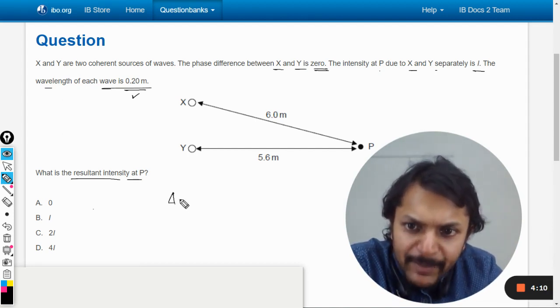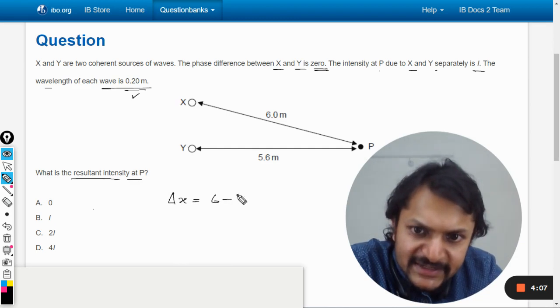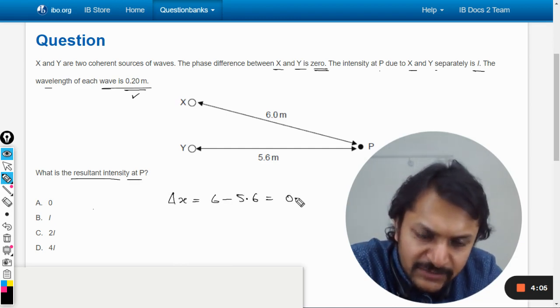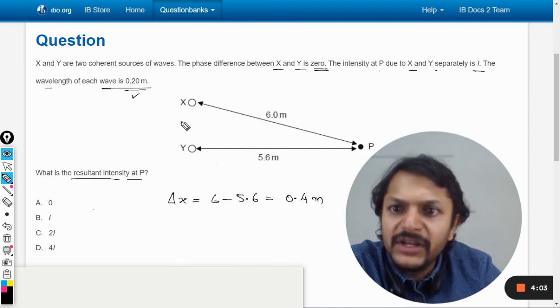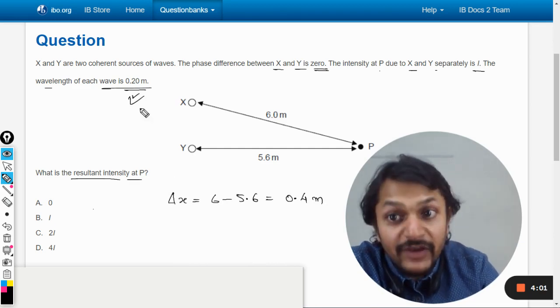Let us see the path difference first of all. So path difference will be 6 minus 5.6 which comes out to be 0.4 meter. And your wavelength is this.